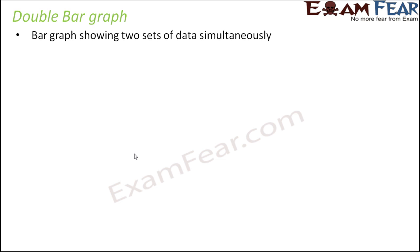A double bar graph represents two sets of data. For example, it can show scores of students in a class for two different semesters. So that means two things are shown at the same time.